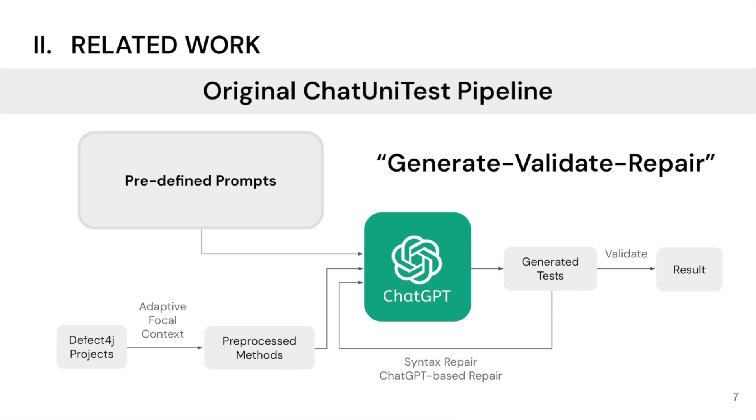If the validation fails, it will prompt ChatGPT to fix the code given the error messages. The generated test can go through several rounds of the repair process until it is error-free or until the maximum number of rounds is reached.